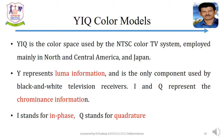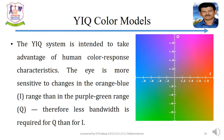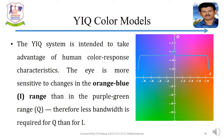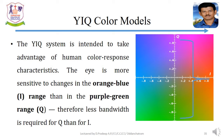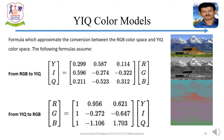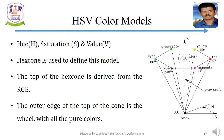In YIQ, Y represents luma information and is the only component used by black-and-white television receivers. I and Q represent chrominance information — I is the in-phase component and Q is the quadrature component. The YIQ system takes advantage of human color response characteristics: the eye is more sensitive to change in the orange-blue range than the purple-green range, so less bandwidth is required for Q than for I. A conversion matrix allows transformation between RGB and YIQ.